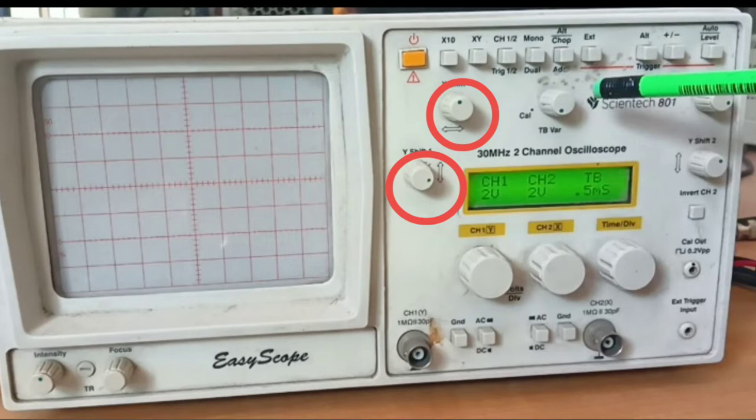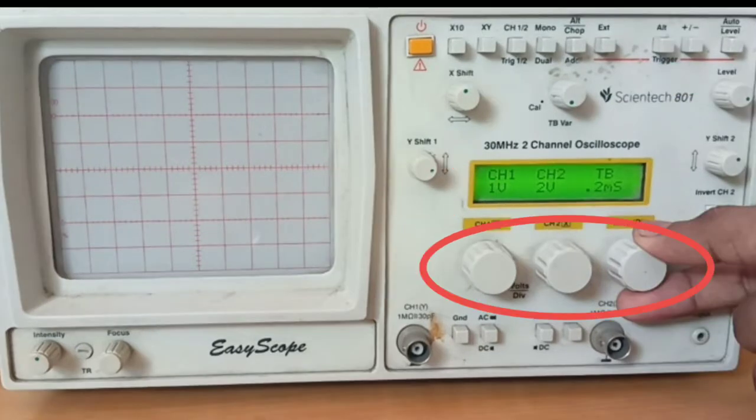So let's adjust. If you want to select the time and amplitude, this is the channel 2. We can select the time period.